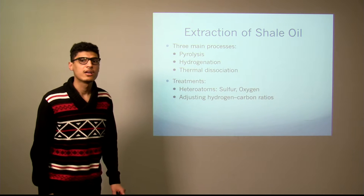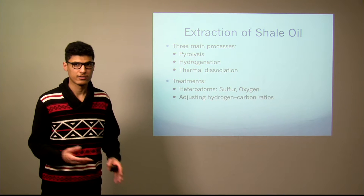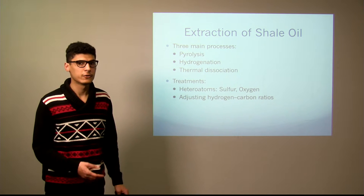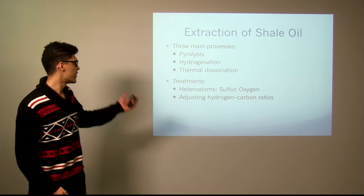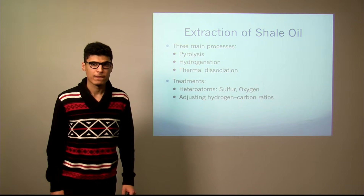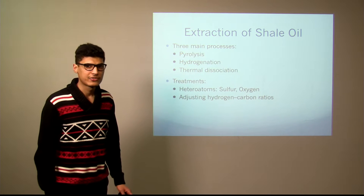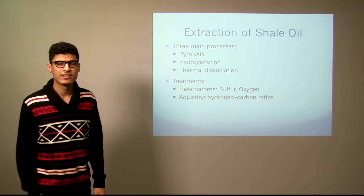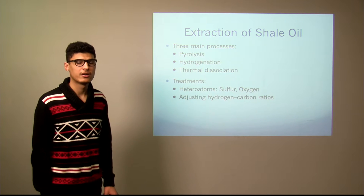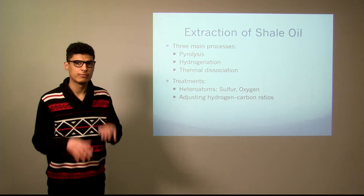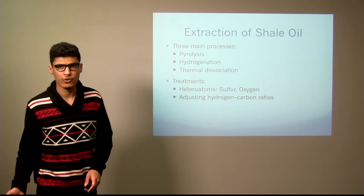The three processes are: pyrolysis, which is heating in the absence of oxygen and involves energy work and more cost; hydrogenation, which involves reactive fluids; and thermal dissociation. Shale oil doesn't come purely — it comes with about 1% sulfur, 0.5% nitrogen and oxygen, and some of these can destroy your catalyst. So in order to purify your shale oil, you need to increase the ratio of hydrogen to carbon, which will allow you to upgrade your shale oil to crude oil.